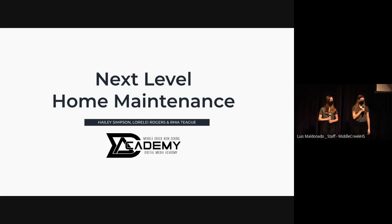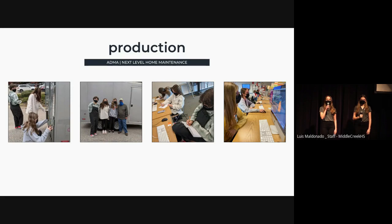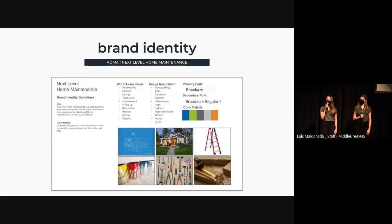We wanted to understand the basic idea of what a wrap was, since none of us had ever created one before. We looked at different backs, sides, and fronts of different trailers. After our call with Mr. Bittner, he offered to bring his trailer over for us to visualize the layouts of our designs. We took multiple pictures and measurements and talked about what he envisioned for the wrap as a whole. Our client provided us with the company logo and color scheme, and with this information we created our brand identity document, which we followed throughout the entirety of the project. This information was vital to the consistency of our designs and helped with the process of the wrap.